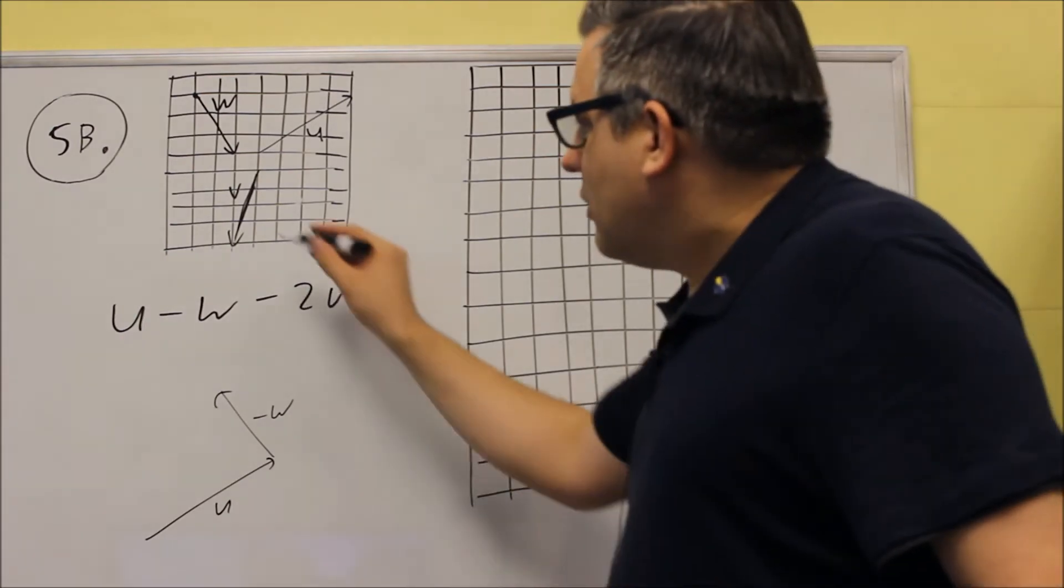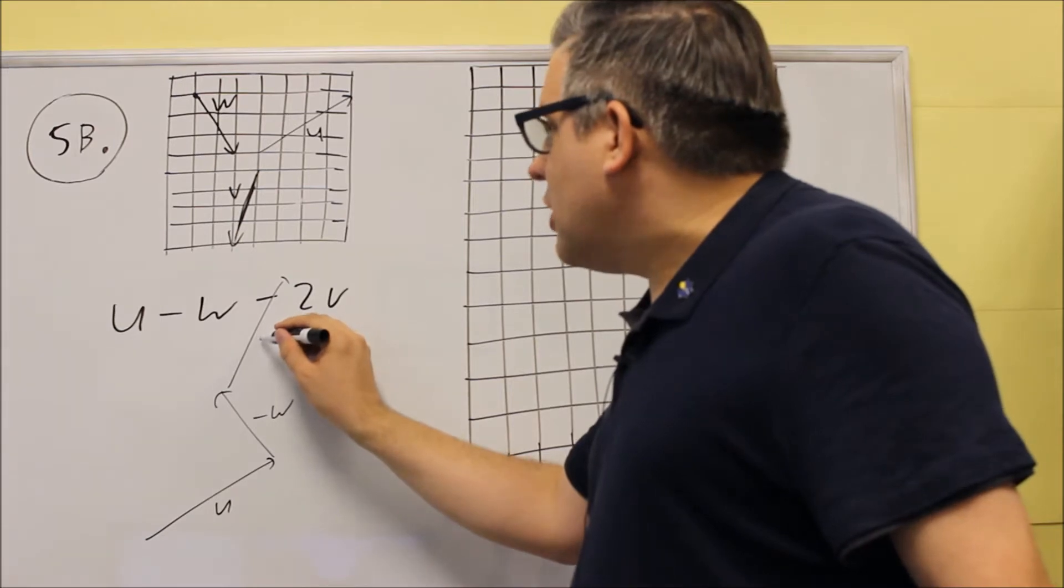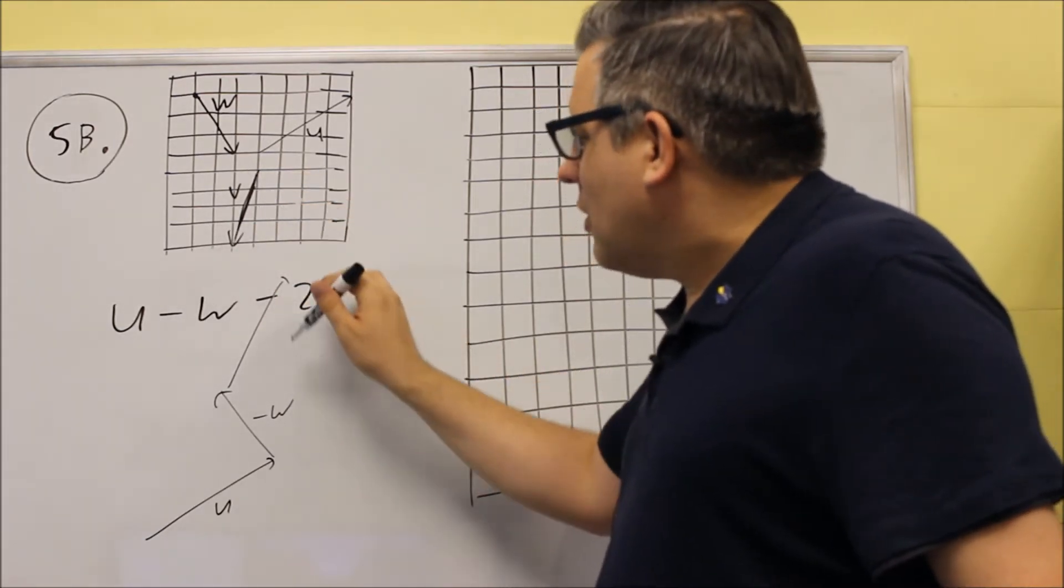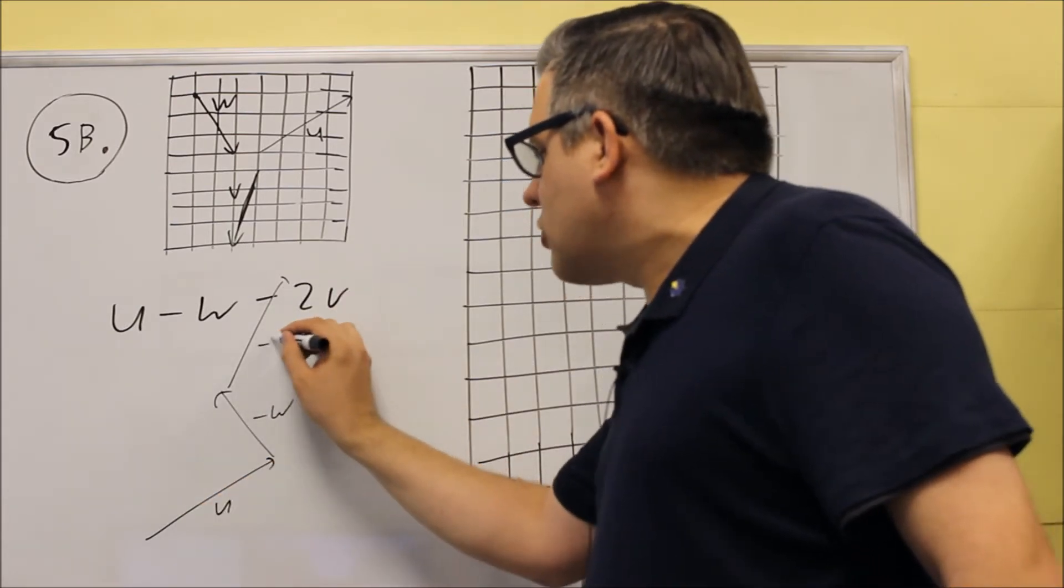Now next, we have the V here, and that's going to go up this direction. If we switch the arrowhead, because it's negative, it's going to go up like that. So we have kind of going this way, this way, and this way, this will be negative 2V.